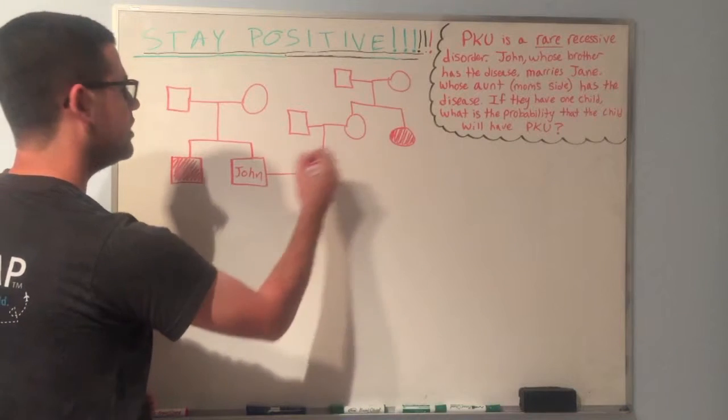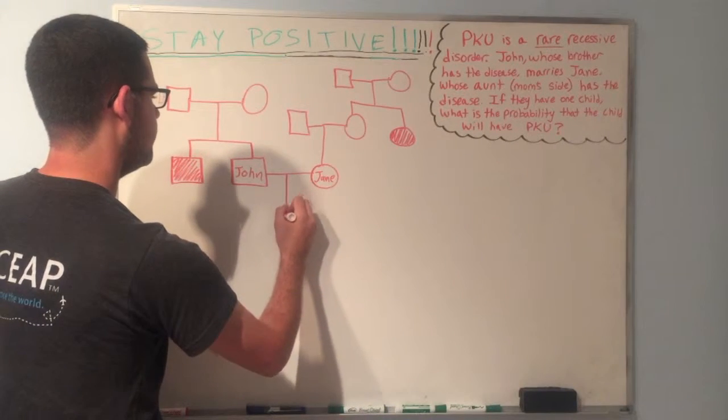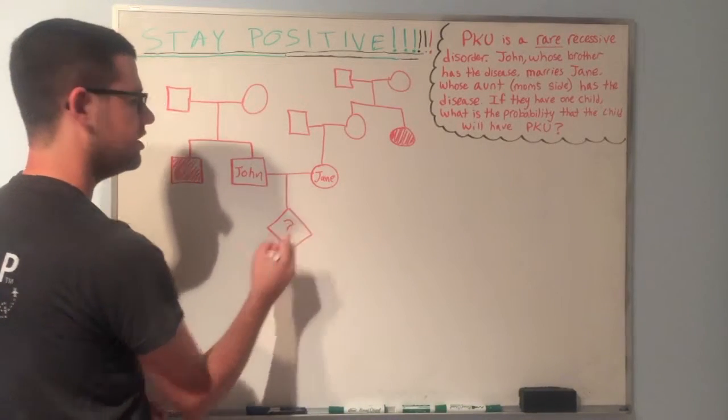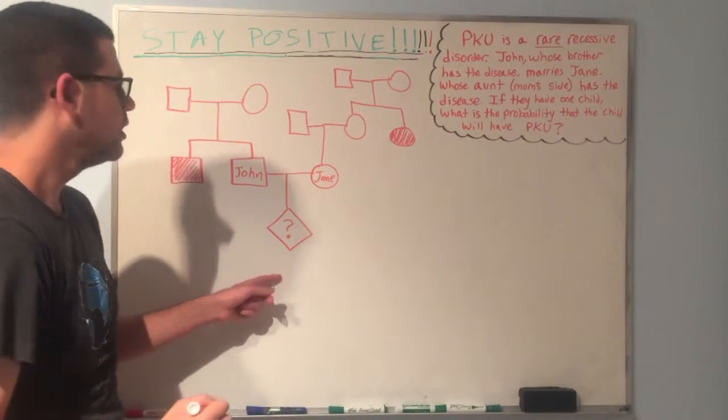And sorry, last but not least, John and Jane's kid, right? The heart of the problem. That's really what we're focusing on here. I'm going to draw a diamond with a question mark to signify that this is exactly what we're looking for.